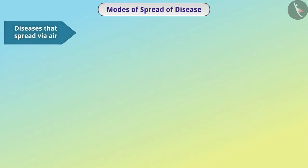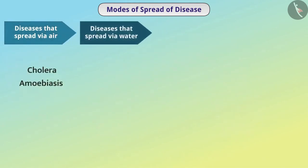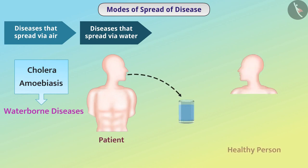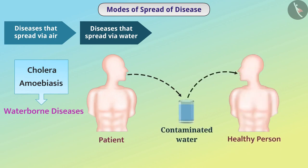Similarly, some diseases spread through water and are called waterborne diseases. If the excreta of a person suffering from cholera is mixed with drinking water and another person drinks that contaminated water, the microorganism enters the healthy person and they also suffer from the disease. Such diseases are caused due to unavailability of clean water.